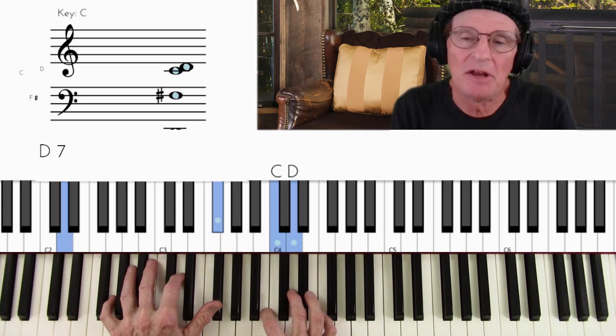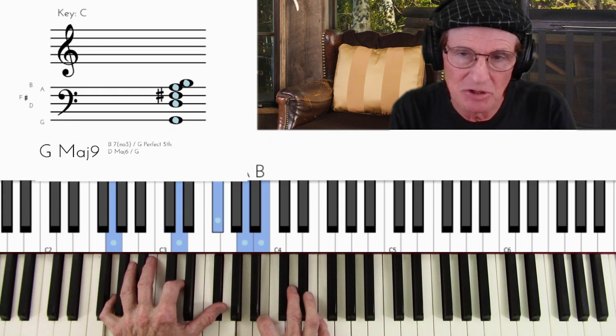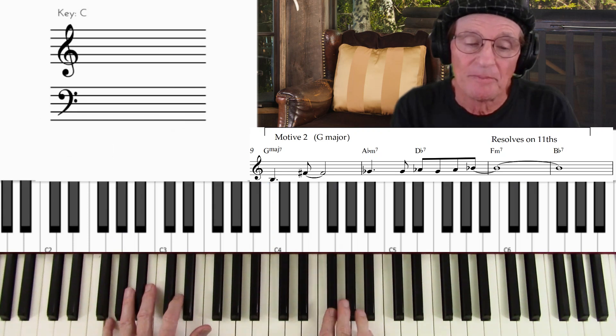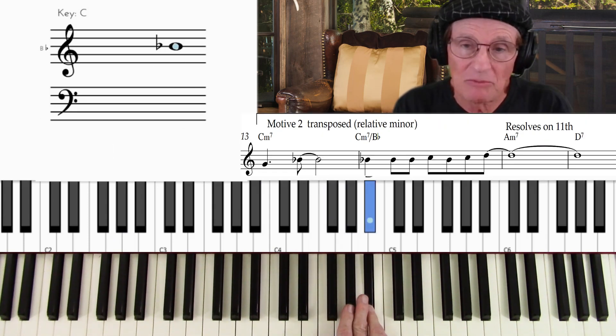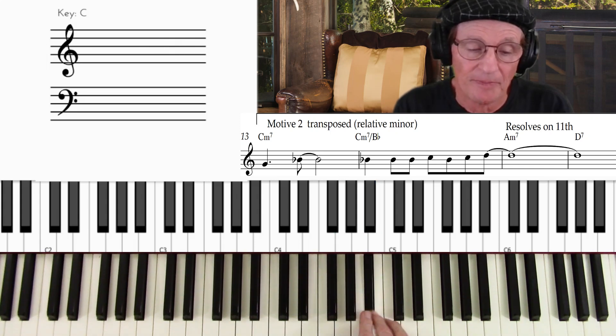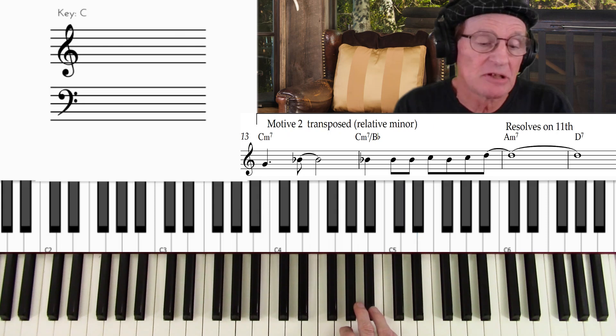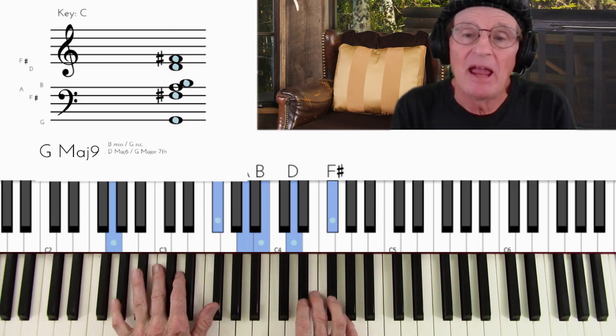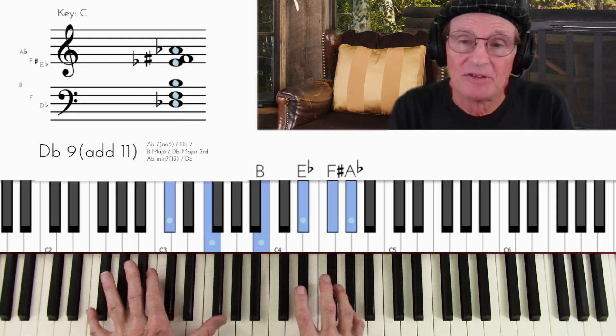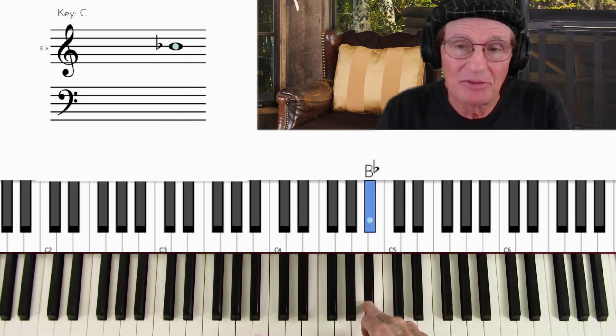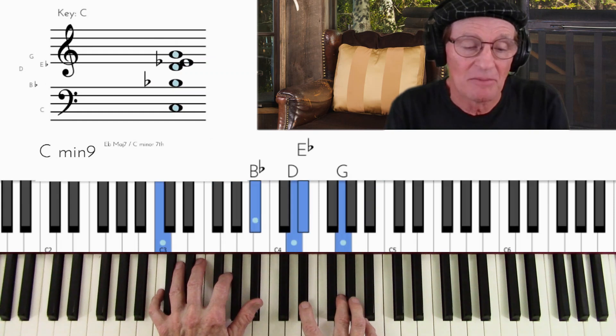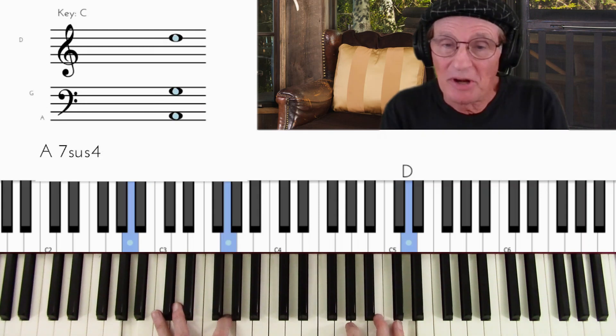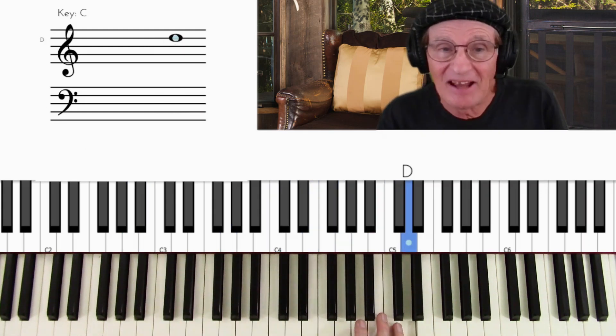Now, here's the next... Now we modulate into G major, and here's the next motive, which is motive number two. Here it is. Then that repeats up a third like this. You see, that works nicely because it stays on that last note, which is the eleventh again, right? It goes G major, A flat minor, D flat to F minor, but that is the eleventh of the F minor. Then it stays on there, on that note, and it goes to an A minor again, A minor seven, with that note is the eleventh.